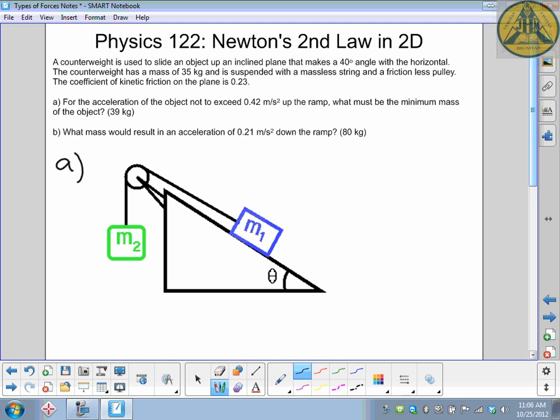The question reads as follows. We have a counterweight used to slide up an object. The incline plane is 40 degrees. The counterweight's mass is 35 kg and there's no friction or mass to the pulley or the string. The coefficient of kinetic friction is 0.23.